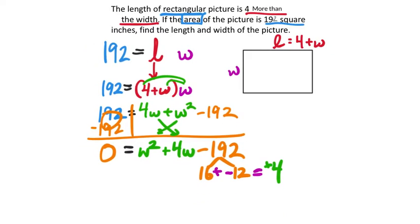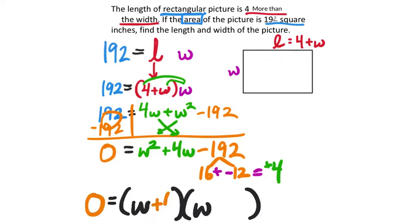So when we add those together, we do get a positive 4W. And remember, you could factor by grouping at this point, but I'm going to use the rule just to give us a little bit of a shortcut. And so we're looking at Ws here. It's still equal to 0, but the two factors were 16, that's positive 16, and then negative 12.